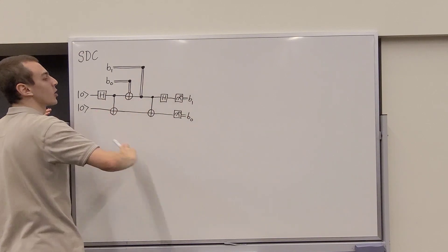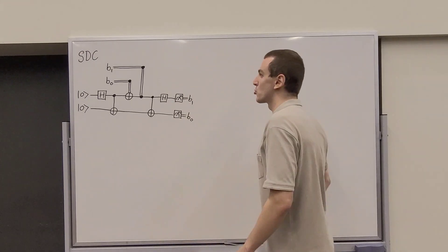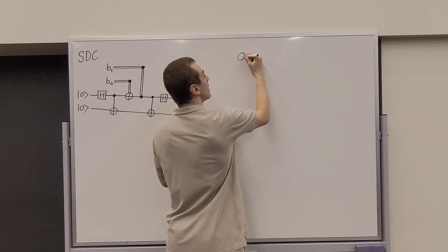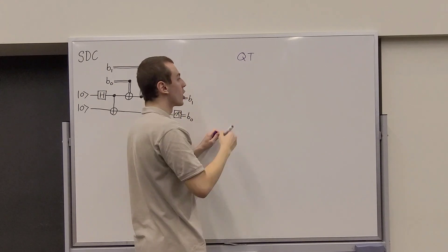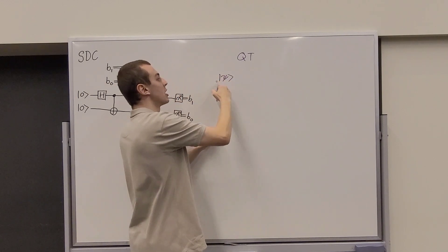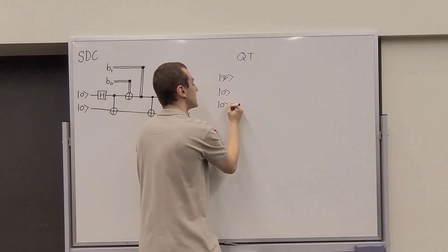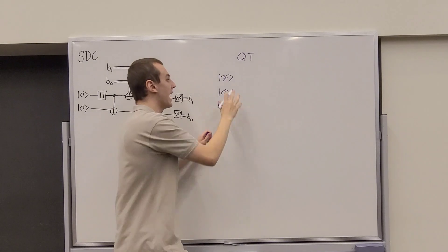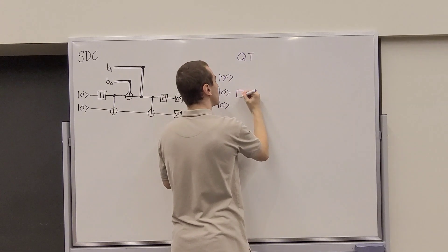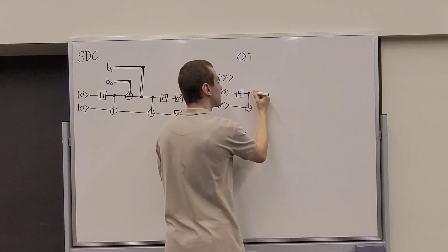Let's compare this to the quantum circuit diagram for quantum teleportation, which we'll abbreviate as QT. Quantum teleportation involves three qubits: one initialized in some general state |ψ⟩ in Alice's lab, and the remaining two initialized in |0,0⟩. We begin with the same entanglement procedure — applying the Hadamard gate followed by the controlled-NOT gate — producing a Bell state.